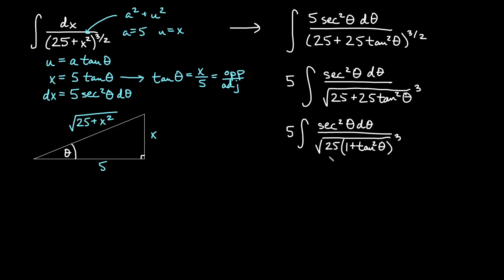So we will go ahead and pull out the square root of 25. But I want you to notice that it is being cubed. When we pull it out of the root, we cannot also pull it out of the cube. So if we go ahead and say 5 times this 1 plus tangent squared theta, all of that cubed.